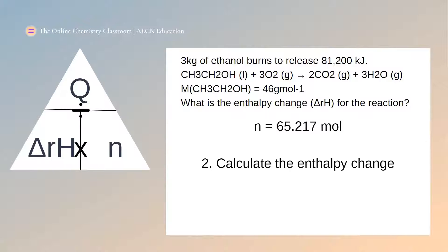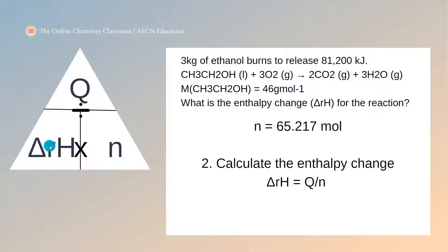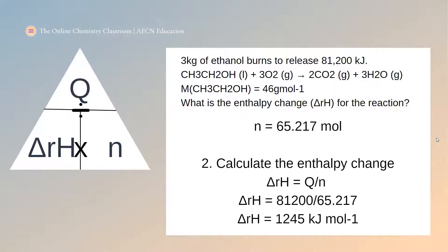So the second step is to calculate the enthalpy change of the reaction — for one mole of ethanol, how much energy would be released? We know we have 65.217 moles and that amount released 81,200 kilojoules. So we now use our second formula from the triangle: covering the enthalpy of reaction gives us energy change divided by number of moles. So it's 81,200 divided by 65.217, which gives us 1,245 kilojoules per mole.